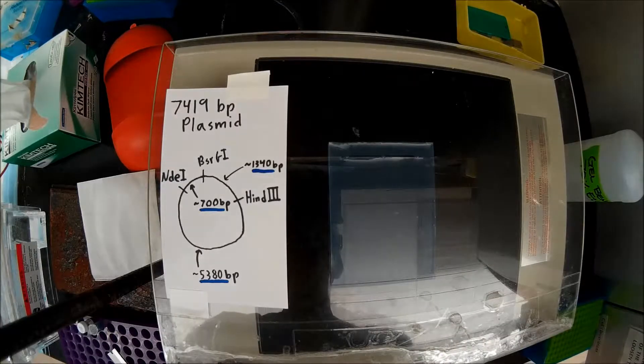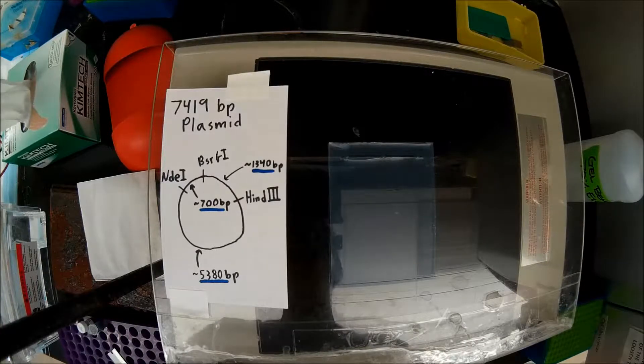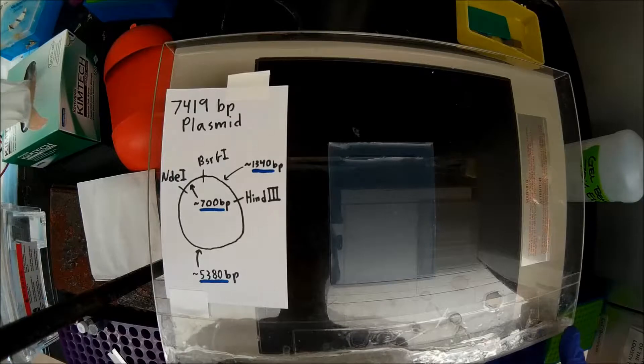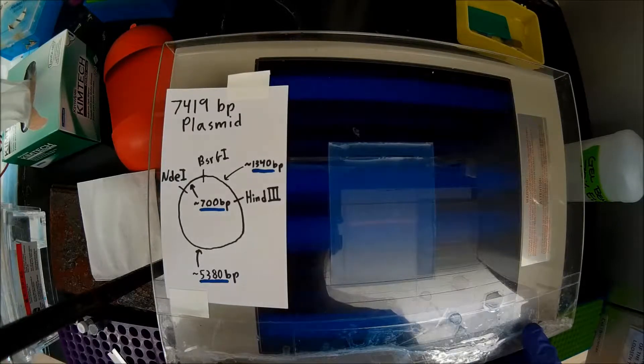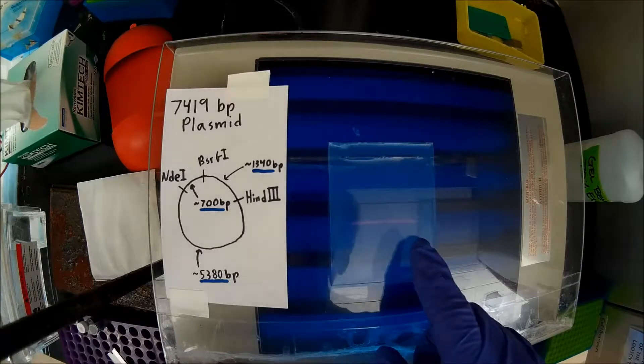Right now we're looking at our lab's UV transilluminator, which we use to excise bands from our agarose gels. When we turn this on, as you can see, our DNA fluoresces orange because we've added gel red to our gels.